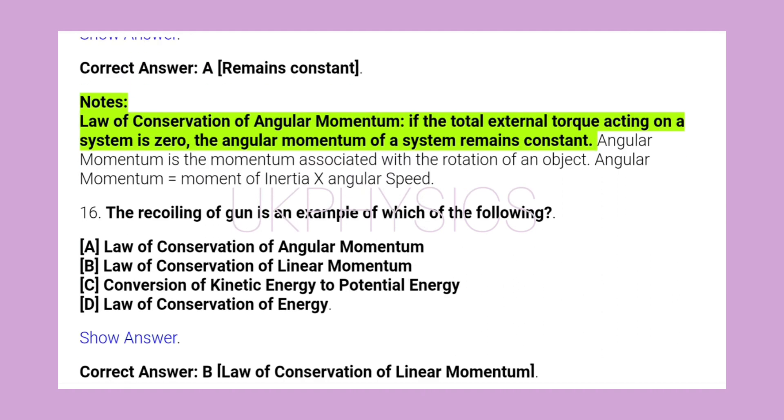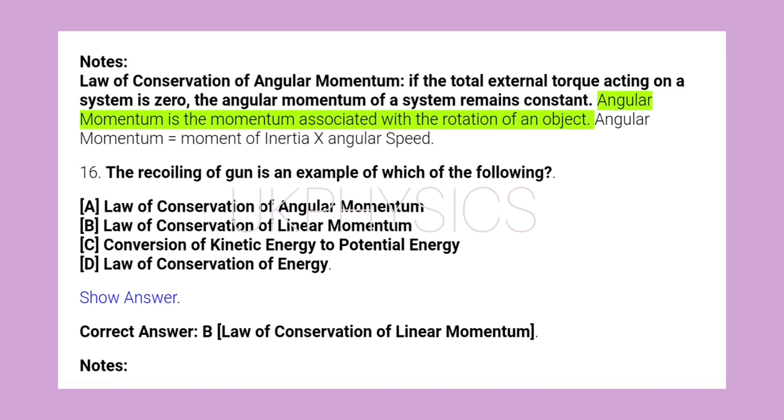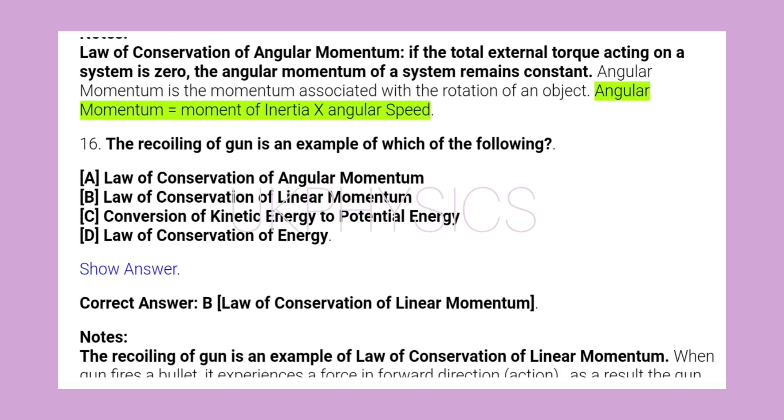Notes: Law of conservation of angular momentum: if the total external torque acting on a system is 0, the angular momentum of a system remains constant. Angular momentum is the momentum associated with the rotation of an object. Angular momentum equals moment of inertia times angular speed.